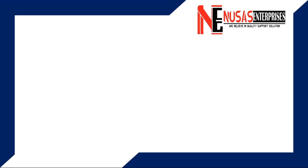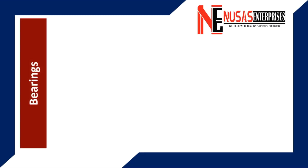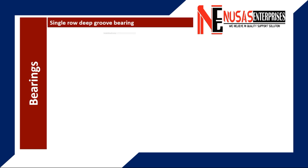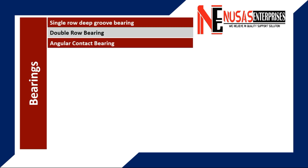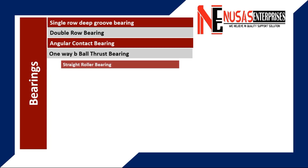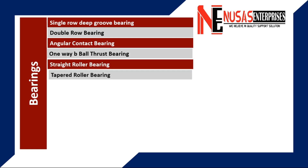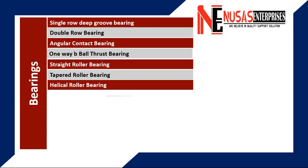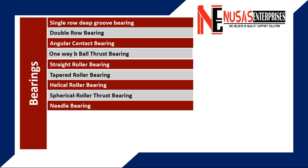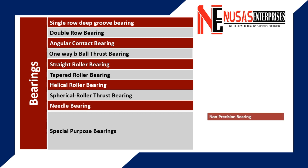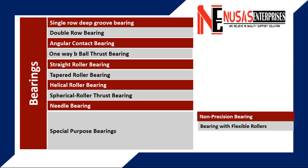Bearings are generally divided into the following categories: single row deep groove bearing, double row bearing, angular contact bearing, one way ball thrust bearing, straight roller bearing, tapered roller bearing, helical roller bearing, spherical roller thrust bearing, needle bearing, and special purpose bearings like non-precision bearing, bearing with flexible rollers, ball bushings, and instrumental bearings.